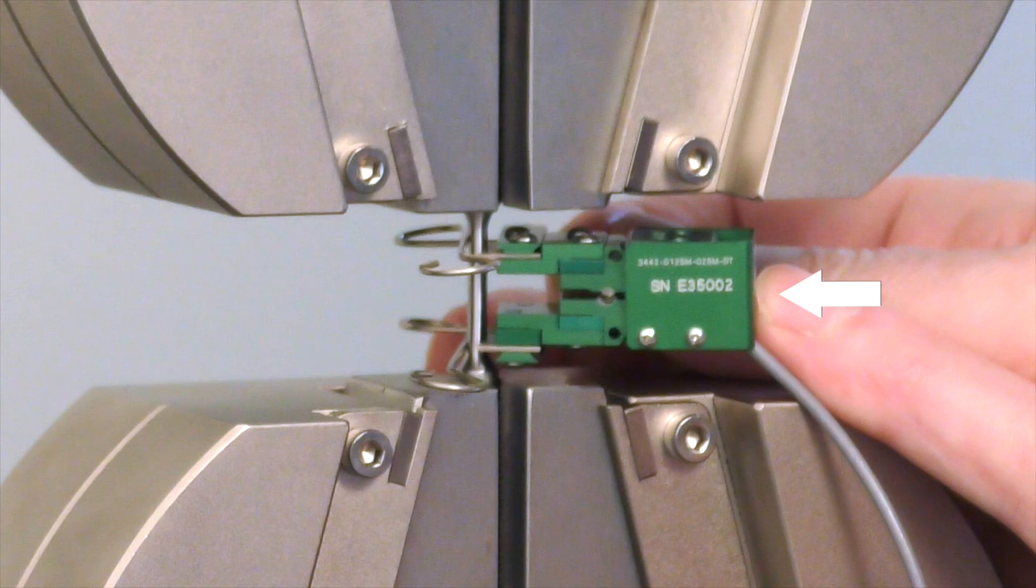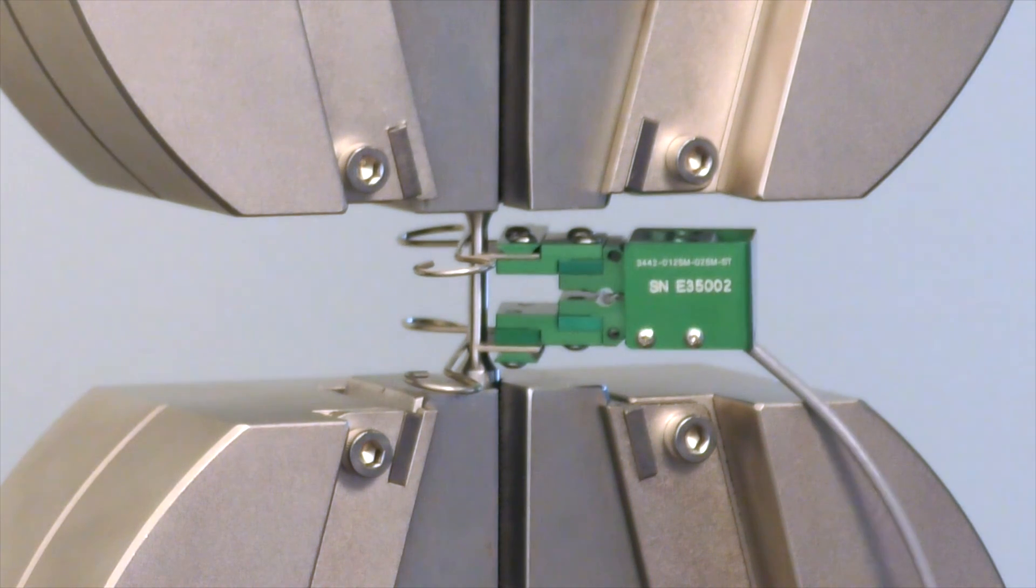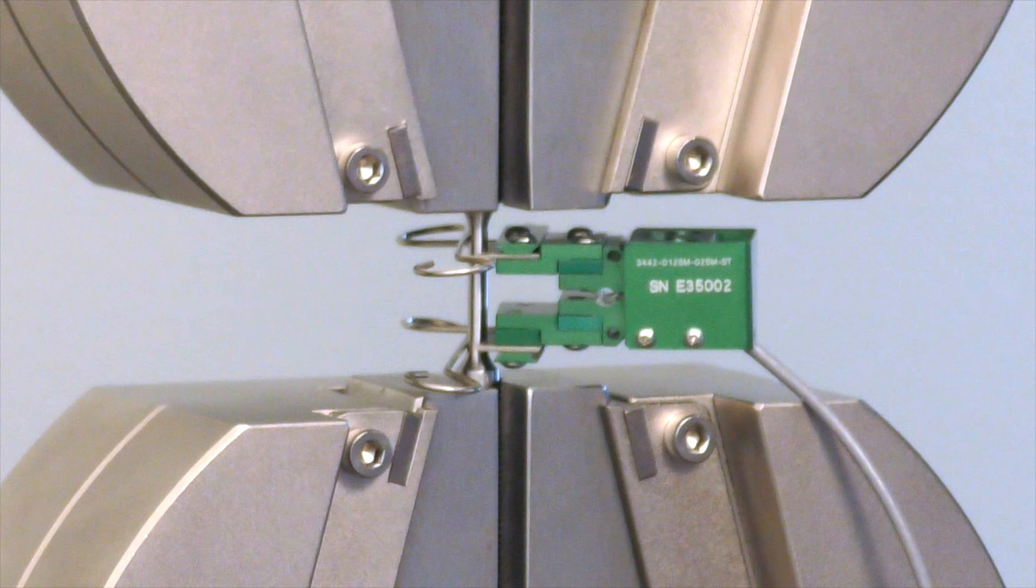You can press on the extensometer's cover. If knife edge movement is suspected, reinstall the gauge length pin and repeat the rocking and pin removal process.